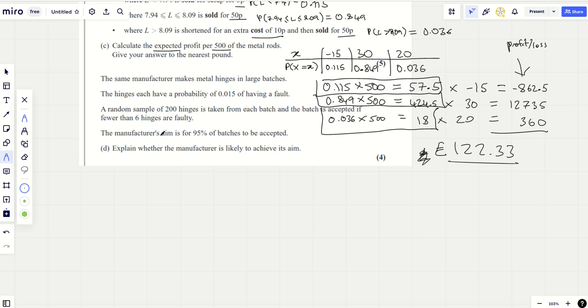The same manufacturer makes metal hinges in large batches. The hinges each have a probability of 0.015 of having a fault. A random sample of 200 hinges is taken from a batch, and the batch is accepted if fewer than 6 hinges are faulty. The manufacturer's aim is for 95% of batches to be accepted. Explain whether the manufacturer is likely to achieve this aim. I can tell you straight away this sounds difficult. What have we got here? I think we've got a binomial model because we've got 200 hinges and there's a 0.015 probability of having a fault.